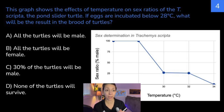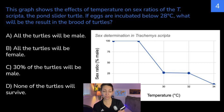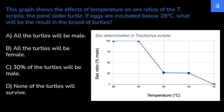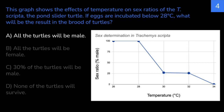Question 4: this graph shows the effects of temperature on sex ratios of T. scripta, the pond slider turtle. If eggs are incubated below 28 degrees, what will be the result in the brood of turtles? A: all the turtles will be male; B: all the turtles will be female; C: 30% of the turtles will be male; or D: none of the turtles will survive. The correct answer is A — all the turtles will be male. From the graph, at 28 degrees or below we have 100% male turtles, because temperature has an effect on the expression of genes and resulting hormones that determine the sex of the turtles.